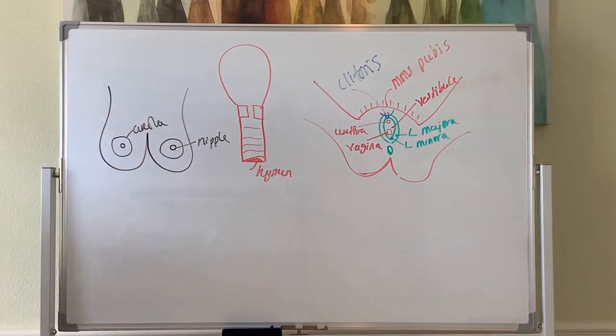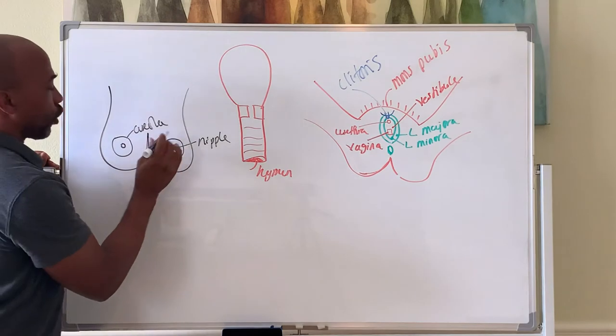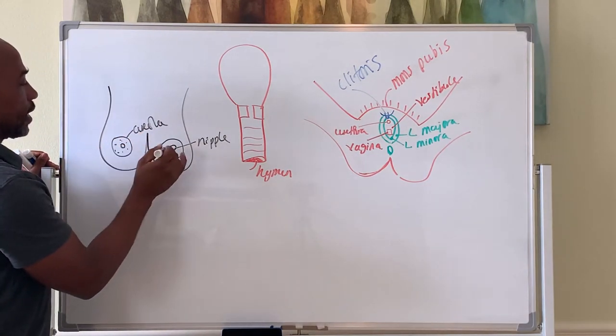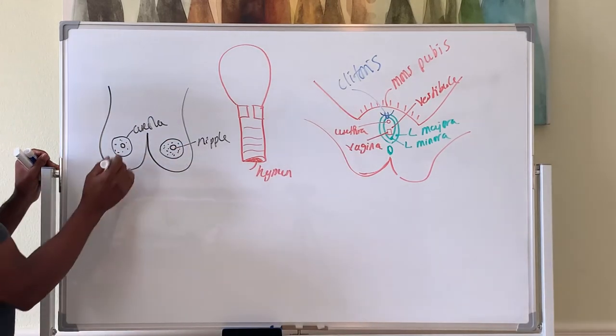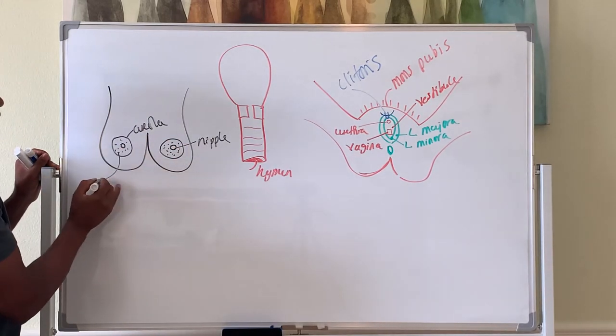It's believed that the darkened nature of the areola helps the baby to see the nipple and know where to latch on to. You also have sebaceous glands, oil glands, that keep the nipple moist inside the areola.